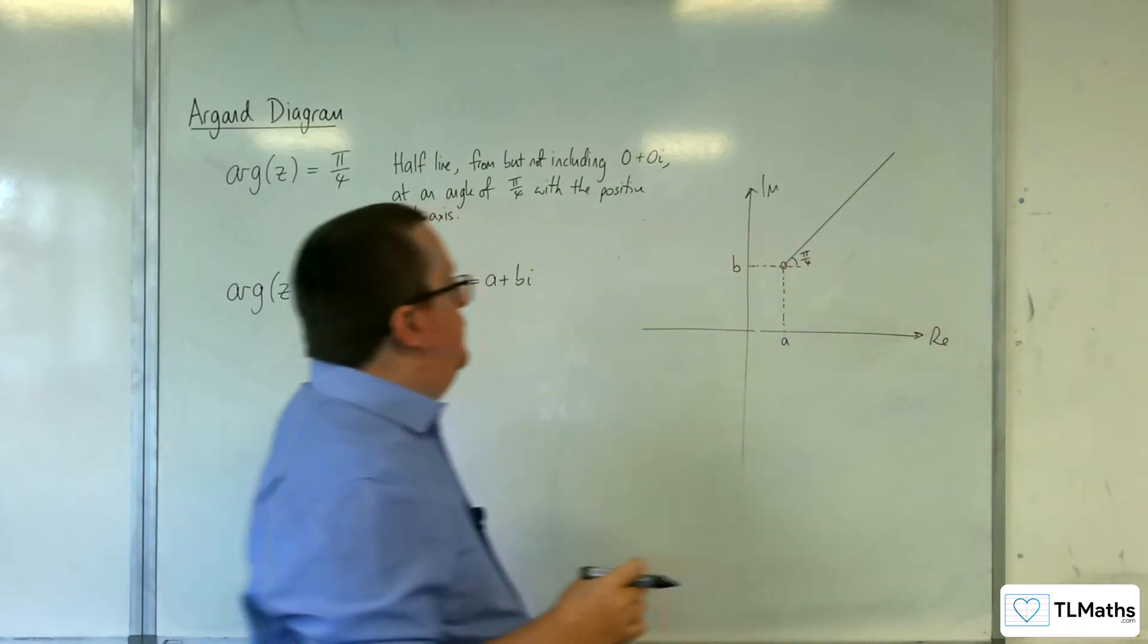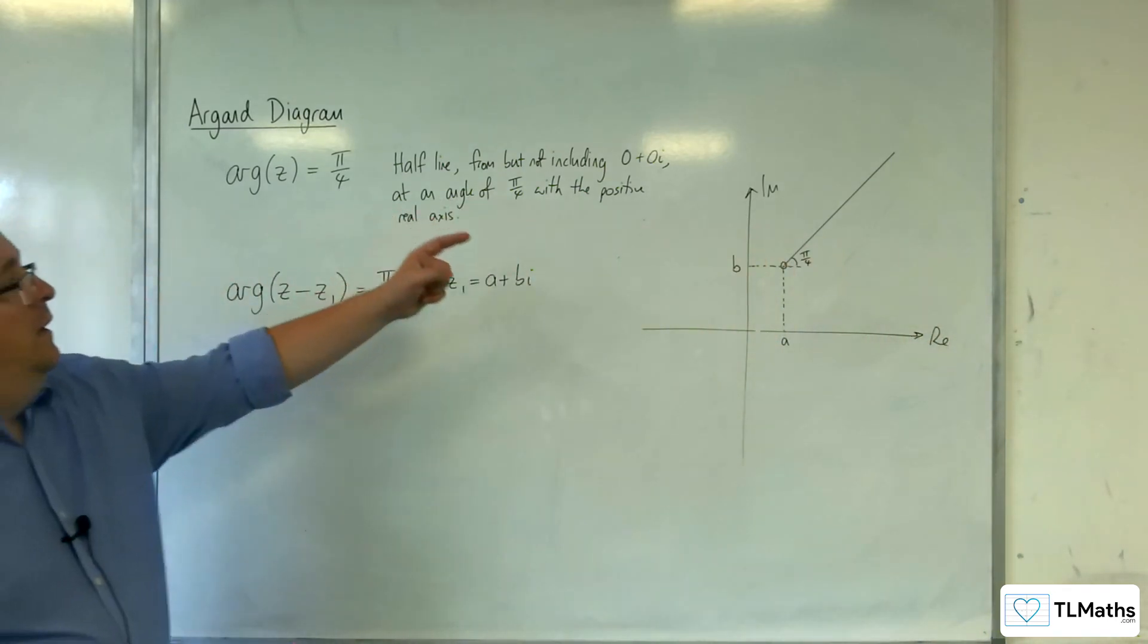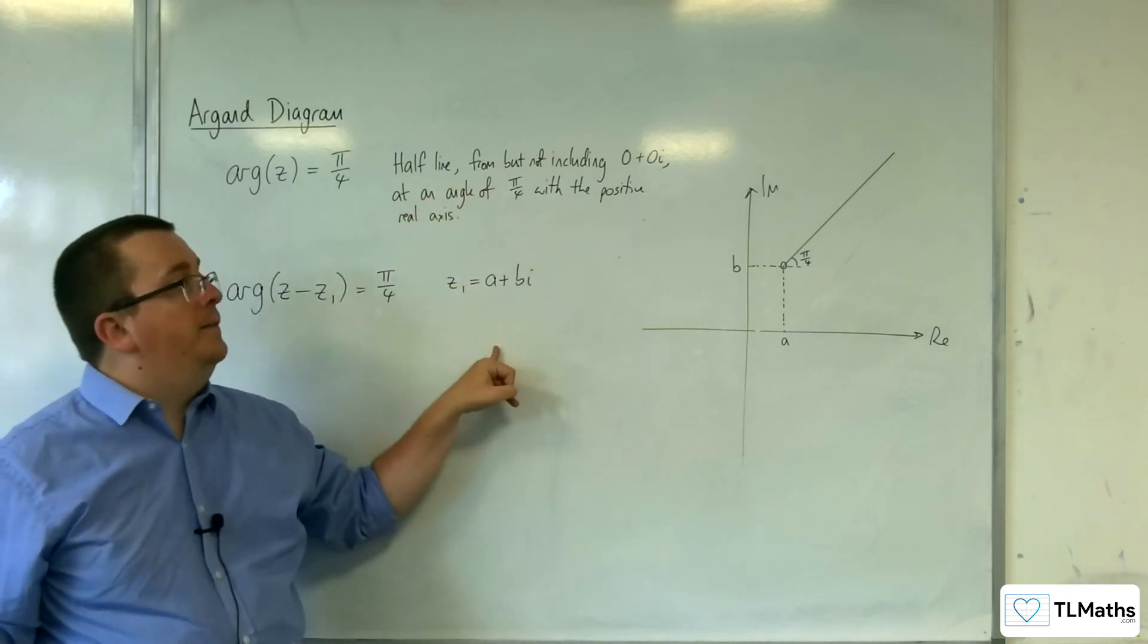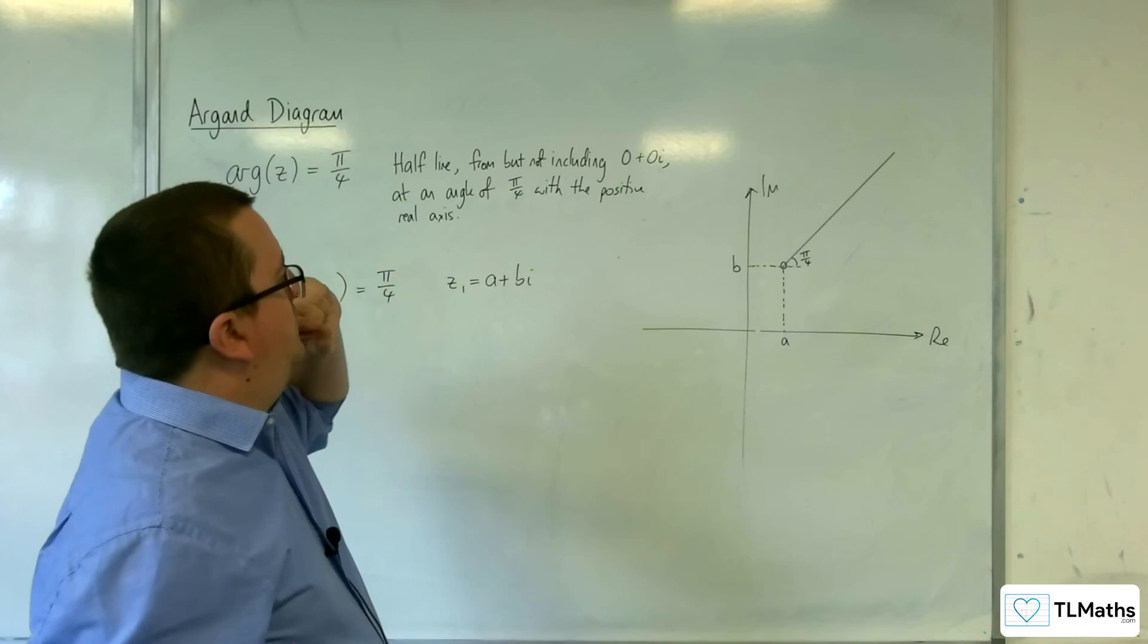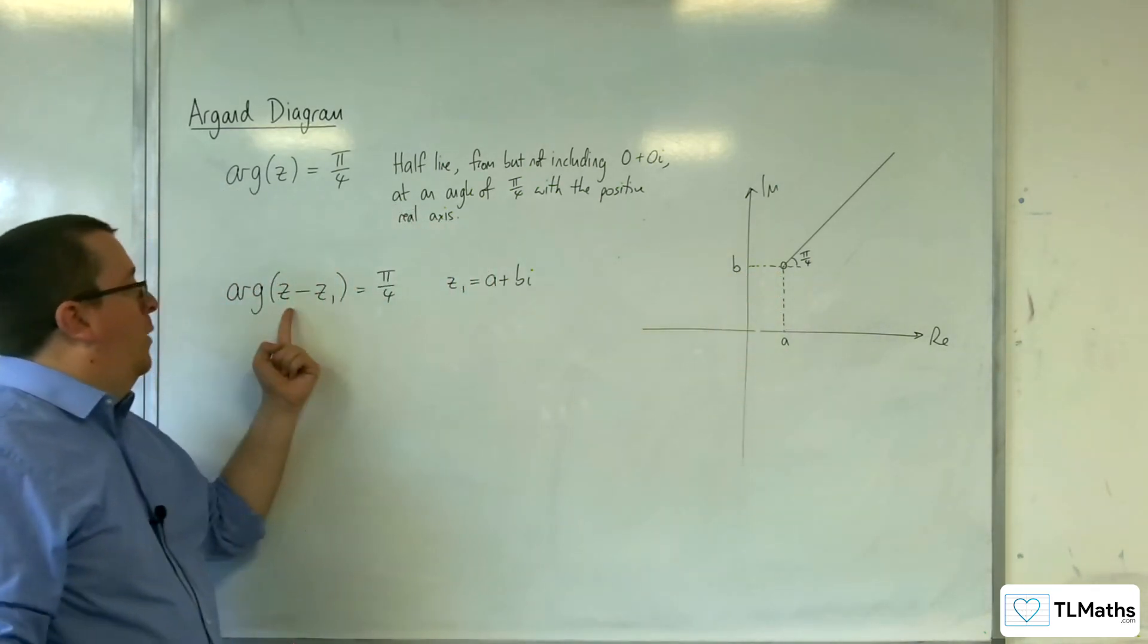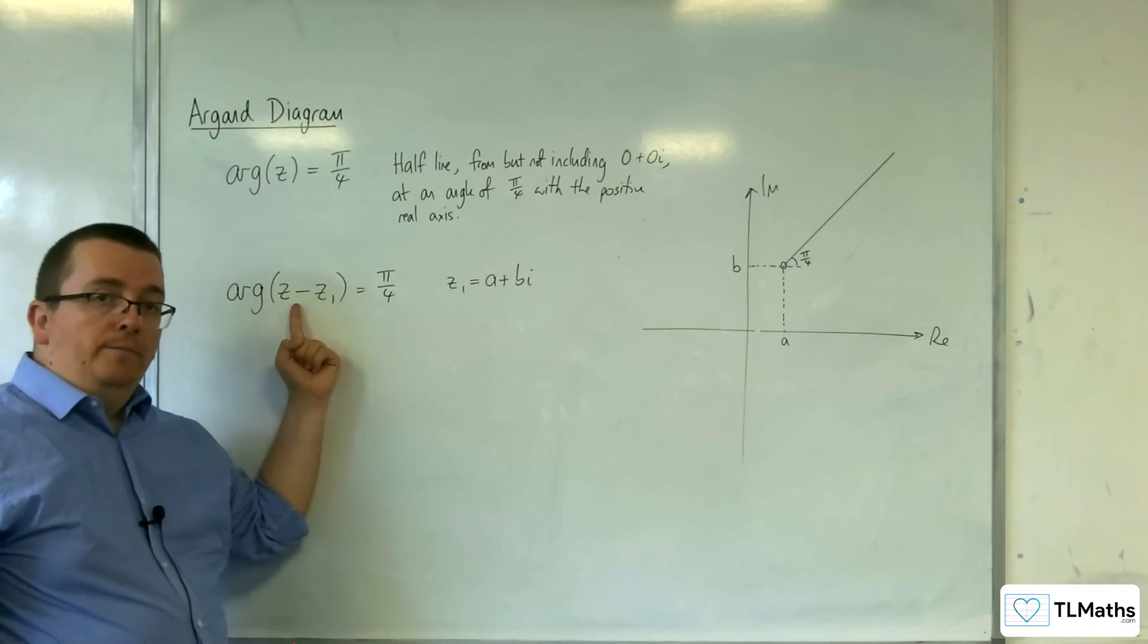And it's no longer starting at 0 plus 0i. It's starting at a plus bi. And it's not including the a plus bi, because if you're at z1, you'd have the argument of 0 again, which is undefined.